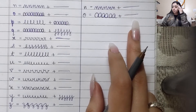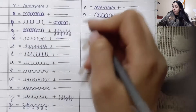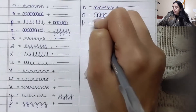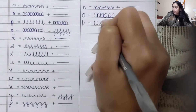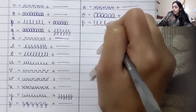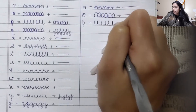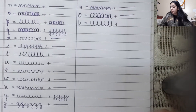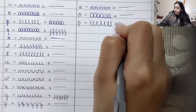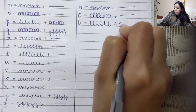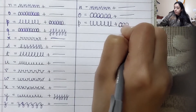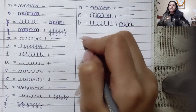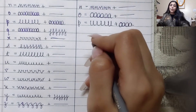Coming on to alphabet P — how is P drawn? Make joined vertical lines, plus make joint O's. You need to make sure that you make joint O's for P.